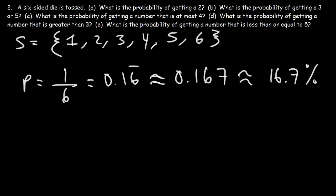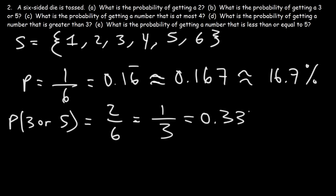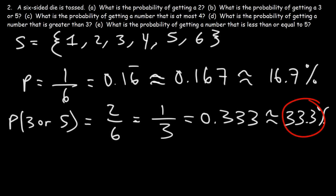What is the probability of getting a three or a five? We have two favorable outcomes out of six, so it's 2/6, which reduces to 1/3. That's approximately 0.333 repeating — a 33.3% chance of getting a three or a five.